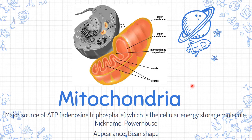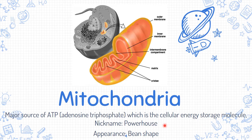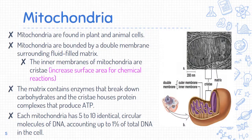First, we are going to focus on the mitochondria. As you can see in this picture, mitochondria is a double membrane-bounded organelle — you can see the two membranes here. Basically, mitochondria is the major source of ATP, which is the cellular energy storage molecule. These molecules store the energy obtained from cellular respiration. The nickname for mitochondria is the powerhouse, as it harbors energy. Its appearance is like a bean shape.